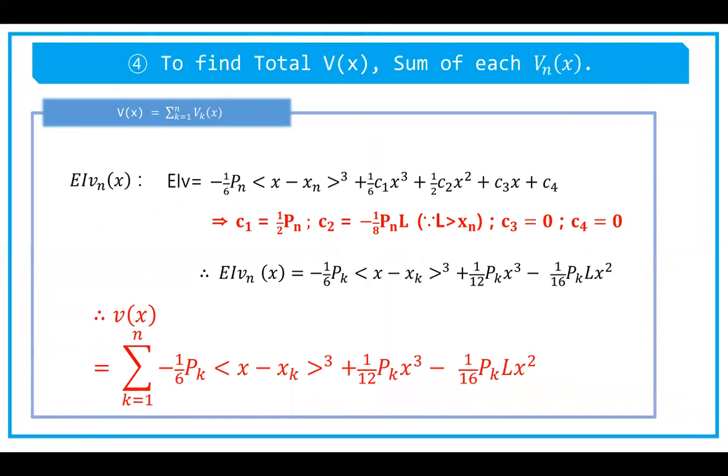Next, we find the total v(x) by summing all the deflections. First, we substitute the values of every constant into the equation of deflection so we have a proper equation to work with. The deflection EI times vn(x) gives us this equation for the total, which is the sum of all deflections.